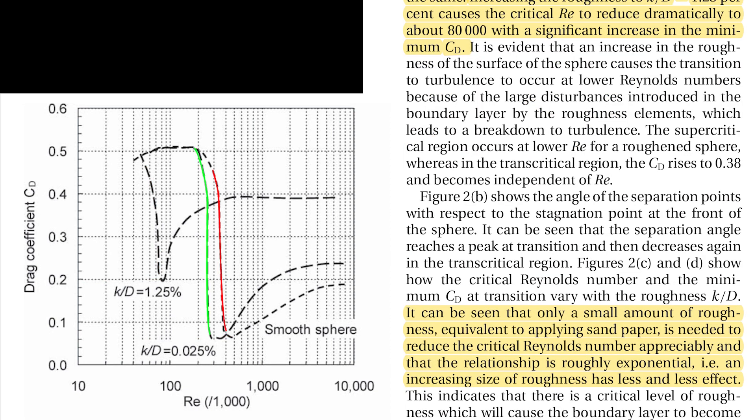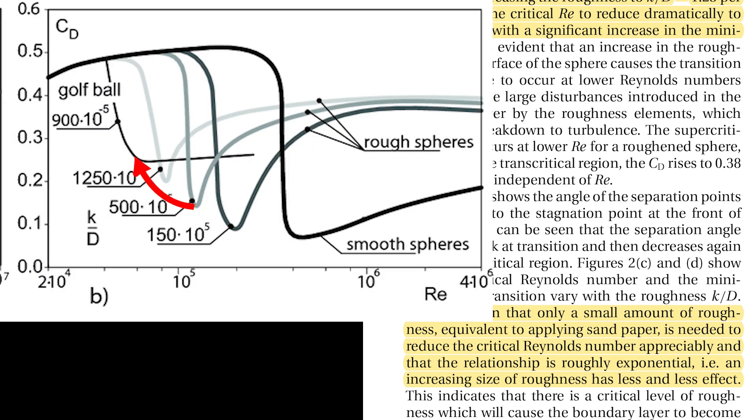It can be seen that only a small amount of roughness equivalent to applying sandpaper is needed to reduce the critical Reynolds number appreciably, and that the relationship is roughly exponential. An increasing size of roughness has less and less effect.